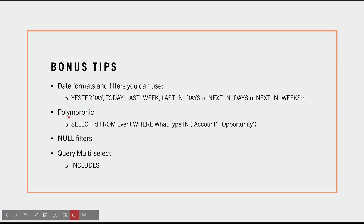Polymorphic fields — I don't want to get too deep into this, but Task and Event are special types, especially the What ID and Who ID fields, because they are polymorphic — meaning they can relate to different objects. Who ID can have Lead or Contact; What ID can have Account, Opportunity, and other objects in Salesforce. Using a standard relationship query won't exactly work for Task and Event, so be mindful of that. Let me know if you'd like a dedicated video on polymorphic fields.